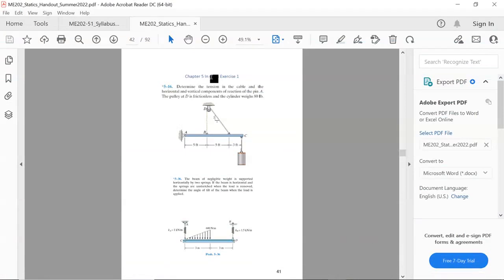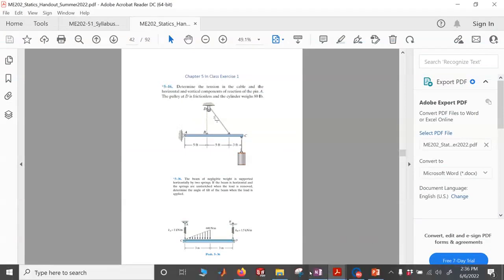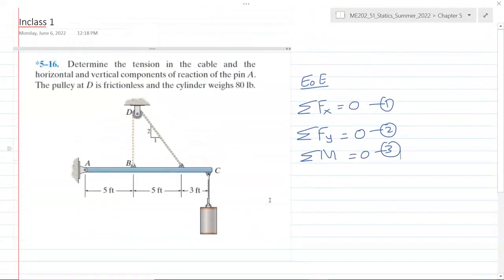This is Chapter 5, in-class exercise 1, problem 516. We need to determine the tension in the cable and the horizontal and vertical components of reaction at pin A. The pulley at D is frictionless and the cylinder weighs 80 pounds.